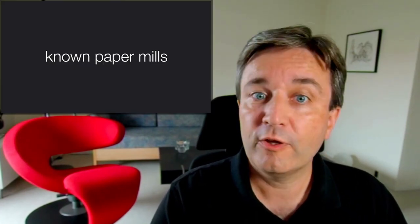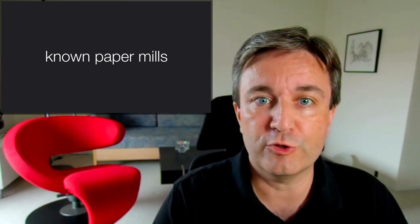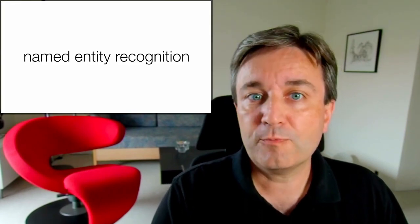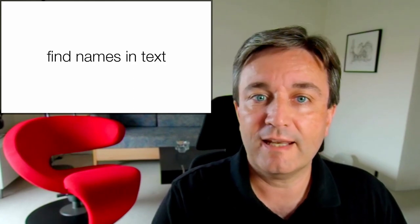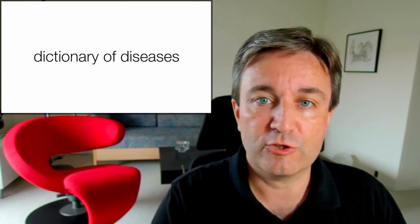We then exclude known paper mill publications. Those are fake articles having been produced just to boost people's publication counts. We take this big corpus and we perform named entity recognition to find names in text using a dictionary of gene names and a dictionary of diseases.